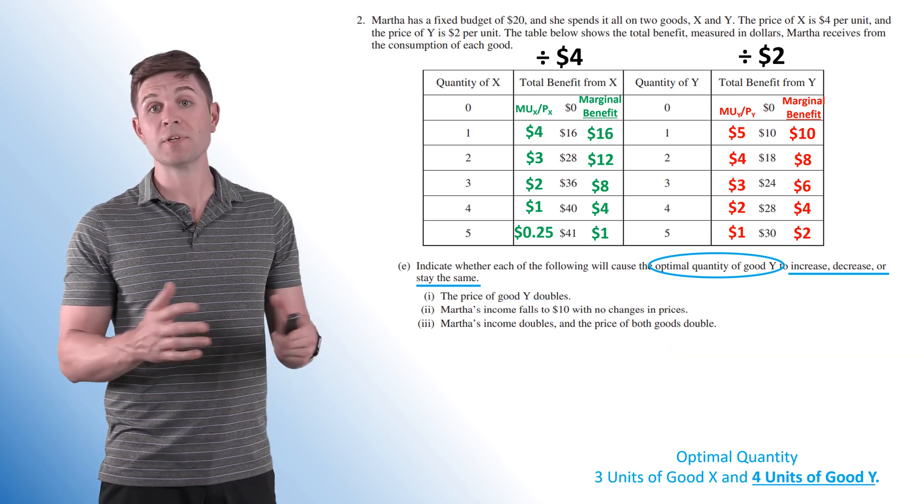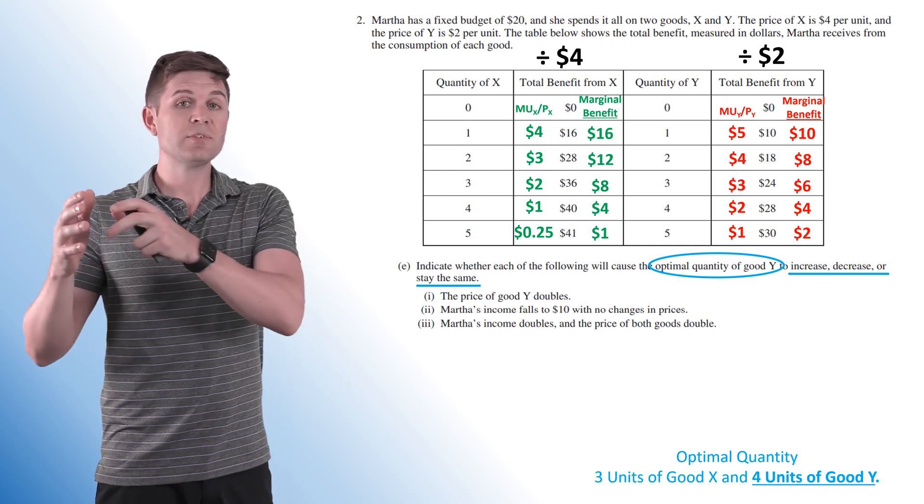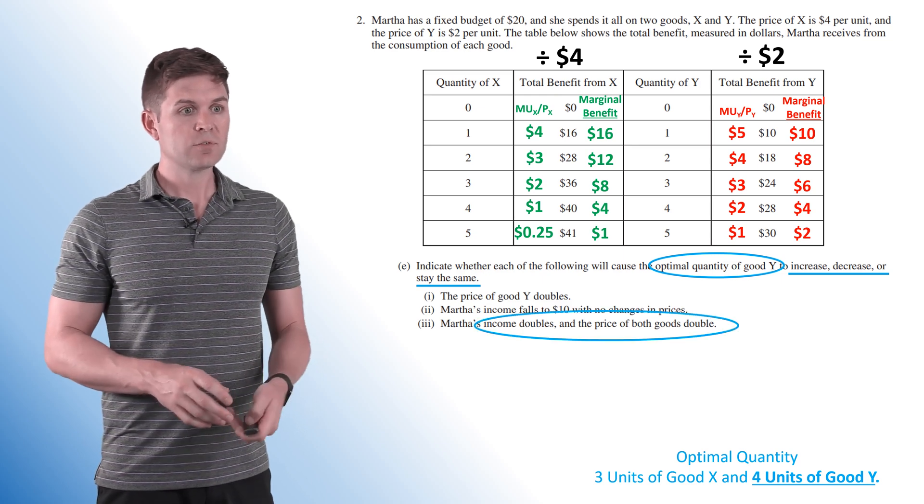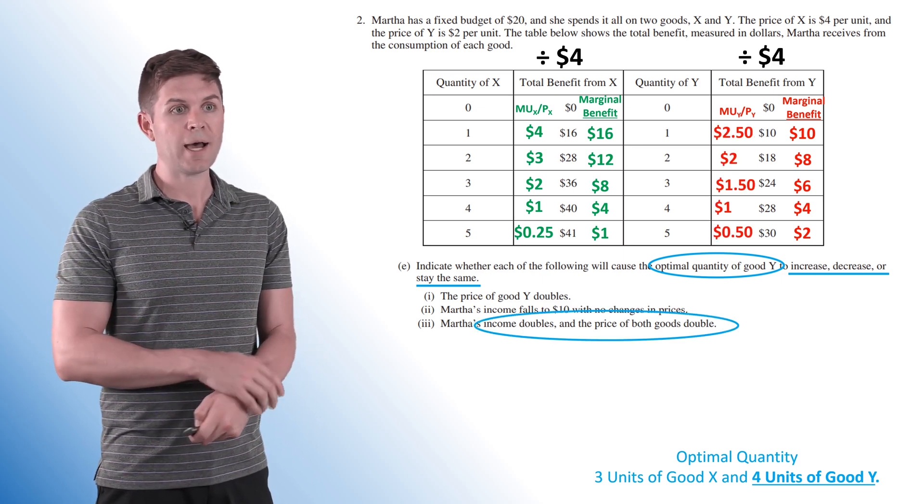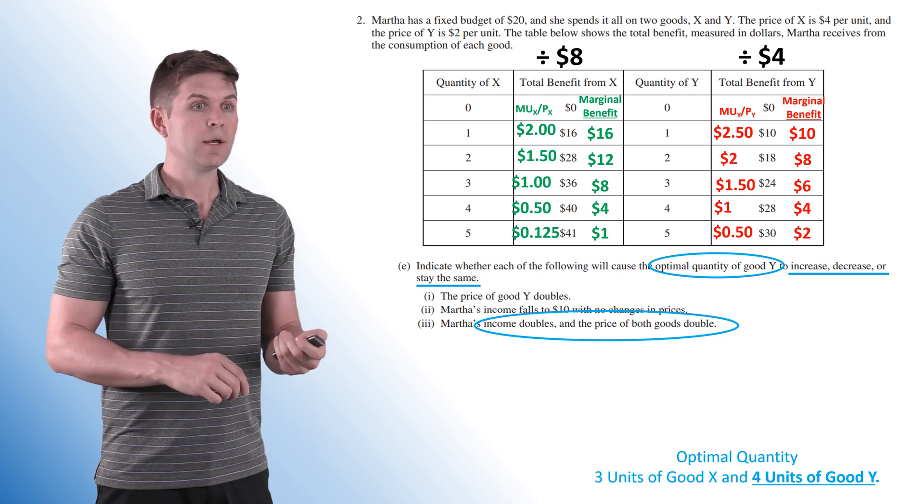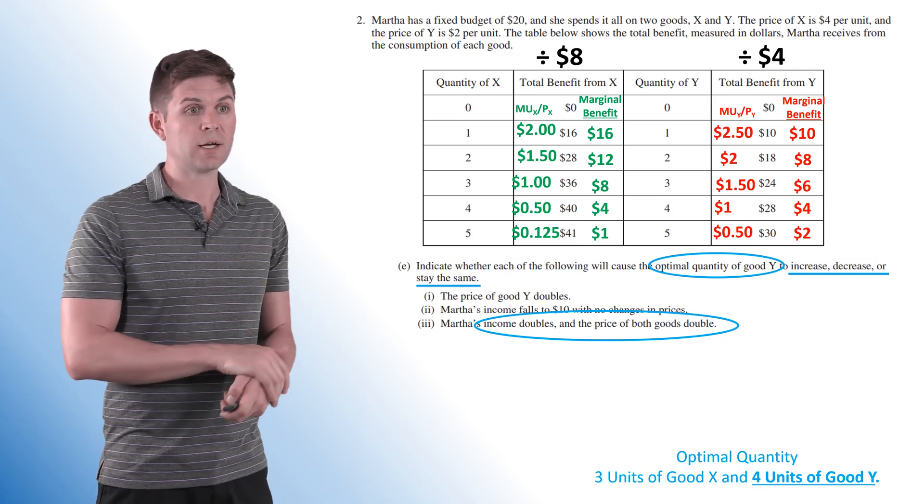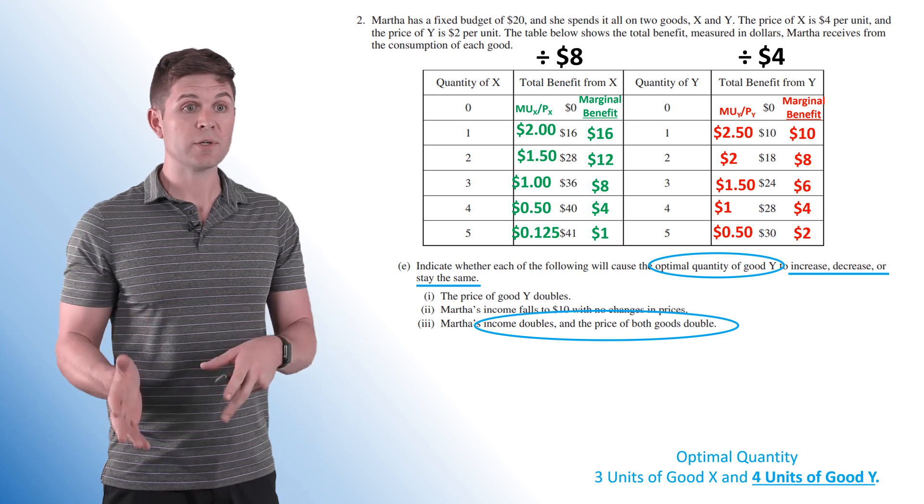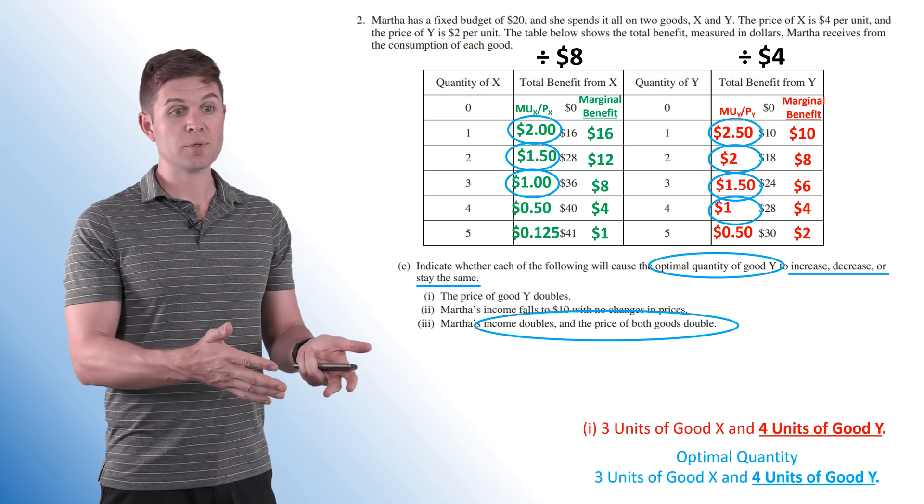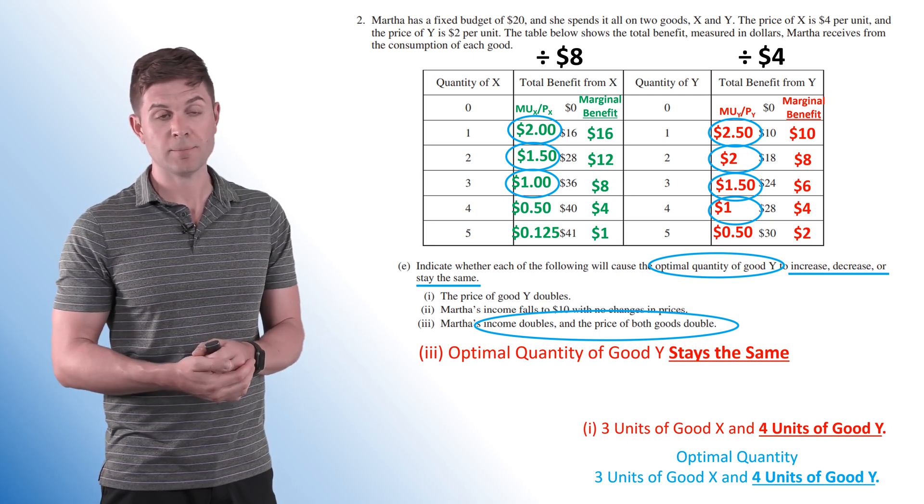Now, the third one. Martha's income doubles and the price of both goods double. Now, in this case, when you have a proportional increase in income and the price of both goods, it's going to stay exactly the same. But I want to run through and just explain why. So everything's going to double here. We're going to change our $2 good Y to $4, cut those marginal utilities per dollar spent in half. And then we're going to take our $4 good X up to $8. And then our marginal utility per dollar spent is also going to get cut in half over there. So we're spending twice as much money on goods that cost twice as much. We are going to buy the exact same amount as we did in the original optimal quantity that we had. So in this case, we're buying three units of good X, four units of good Y. And the answer is that the optimal quantity of good Y stays the same. And that finishes up that question.